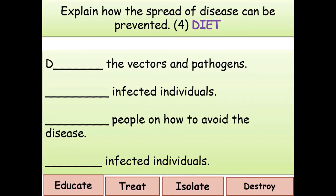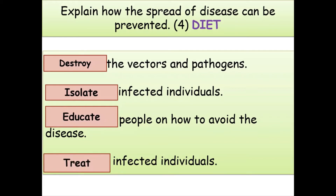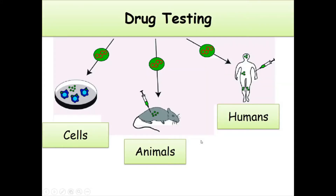To recap DIET: destroy the vectors and pathogens, isolate infected individuals, educate people on how to avoid disease, and treat infected individuals. In drug testing there are three main stages: testing on cells in the lab, testing on animals in the lab, and then testing on humans. Testing on cells and animals is known as the pre-clinical stage; testing on humans is the clinical stage.